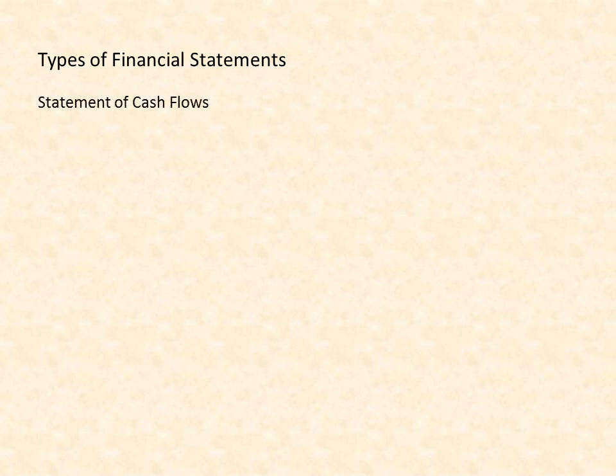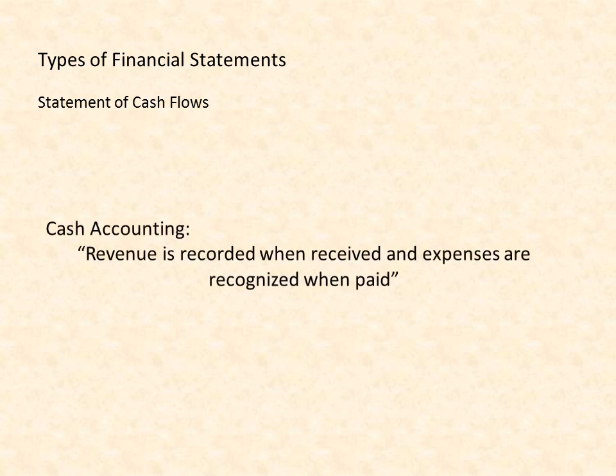There are four main types of financial statements. First is the statement of cash flows. This shows the inflows and outflows of cash and cash equivalents for a company. The purpose of this statement is to assess whether a company has enough cash and is able to cover its obligations when they fall due. As such, the statement of cash flows is prepared using the cash accounting method, which implies that revenue is recorded when received and expenses are recognized when paid.